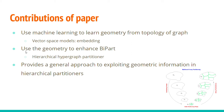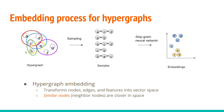We also provide a general approach to exploit geometric information in hierarchical partitioners. To map hypergraph nodes into vector space, we start from a hypergraph, perform a random walk to gather samples, and then run a skip-gram neural network to transform these nodes into vector space. The hope is that nodes that are neighbors in the hypergraph will end up being closer together in vector space.